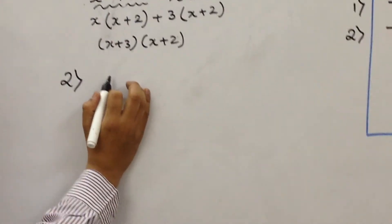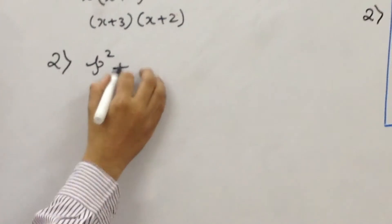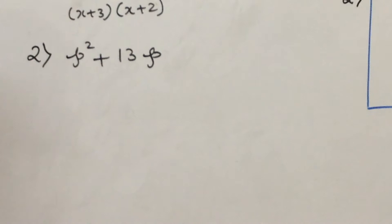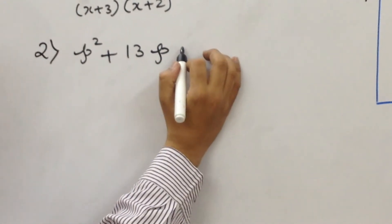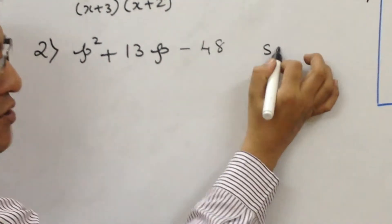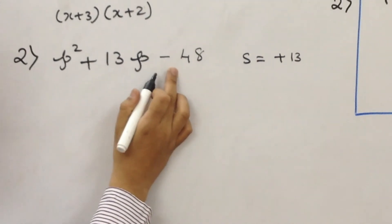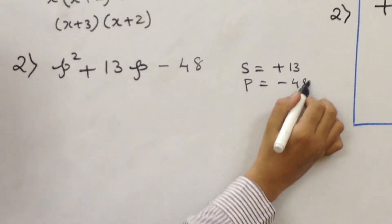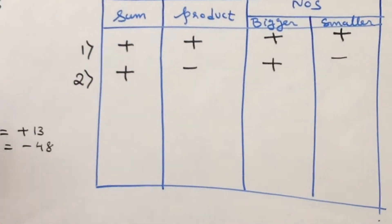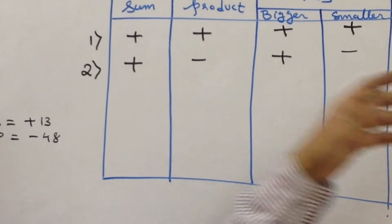I want sum as plus and product as minus. So let me say p squared plus 13p minus 48. The sum over here is plus 13, and the product is minus 48. As per my technique, the bigger number will be plus and the smaller number will be minus. We don't need to go beyond 13 for the bigger number. Students, you need to know your multiplication tables very well: 16 threes are 48.